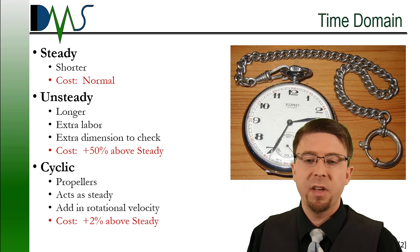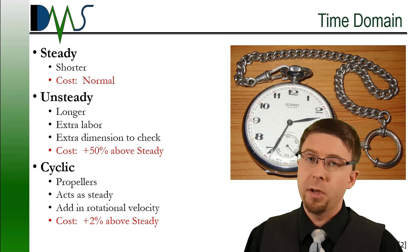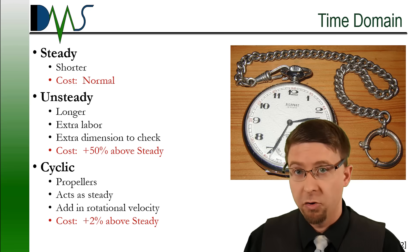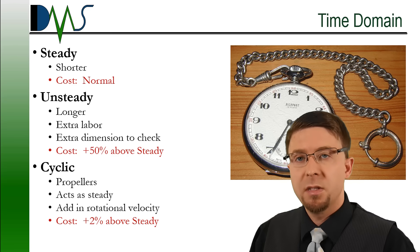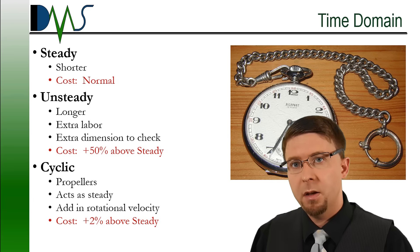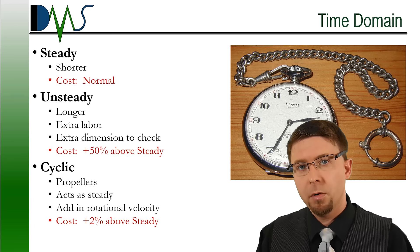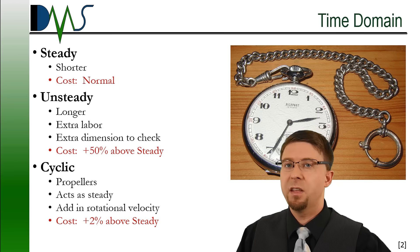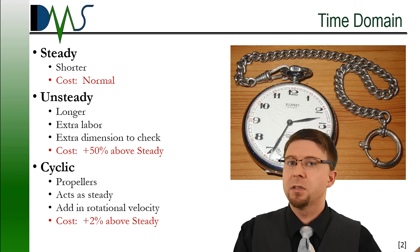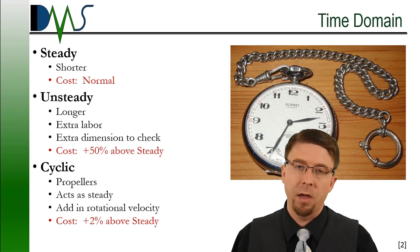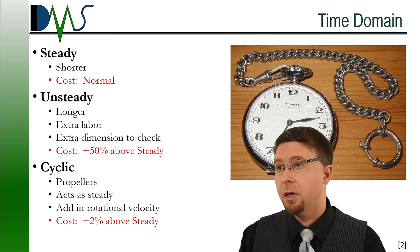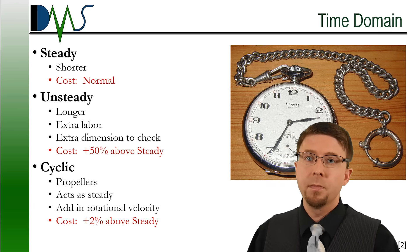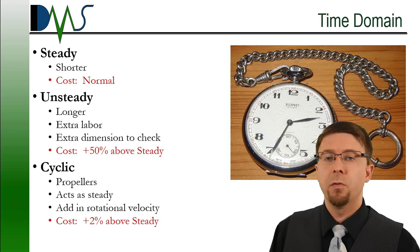Next up, we have the time domain. This isn't really something you get to pick yourself — it's going to be dictated by the physics of whatever you're trying to simulate. Steady simulations are steady state: they're shorter, with nothing that changes with time. You're just looking at steady flow characteristics — constant velocity flow in a pipe, a ship traveling at a steady velocity, a car at constant speed. That's your normal case for normal cost.